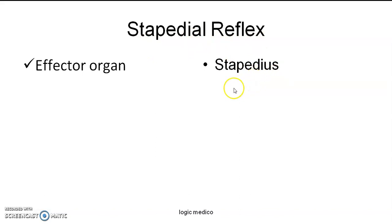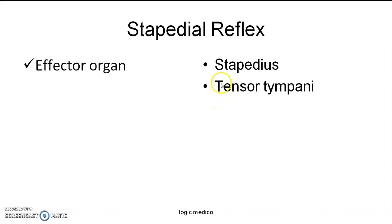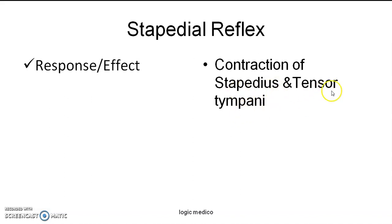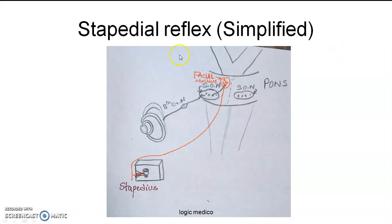The effector organ is the stapedius muscle. When it contracts, it pulls the stapes out of the oval window, thereby stabilizing the ossicular chain and preventing further movement. Also, the mandibular division of the trigeminal nerve controls the tensor tympani, which is also a component of this reflex and attaches to the malleus. So, the simplified version: receptor is the hair cells of the organ of Corti; afferent nerve is the eighth cranial nerve; center is the pons with the superior olivary nucleus and motor nucleus of the facial nerve; efferent nerve is the facial nerve supplying the stapedius via the nerve to stapedius, stabilizing the stapes like a piston in the oval window.